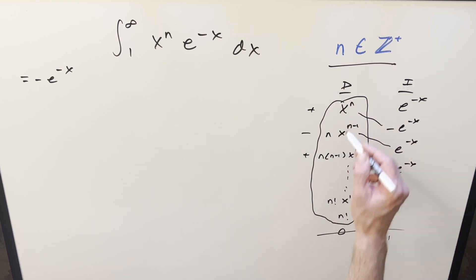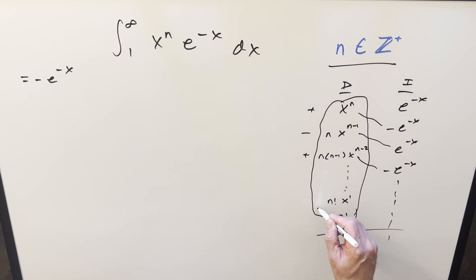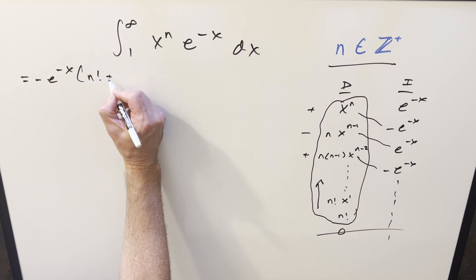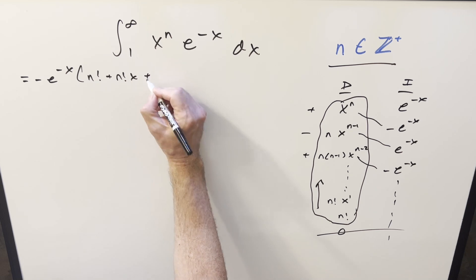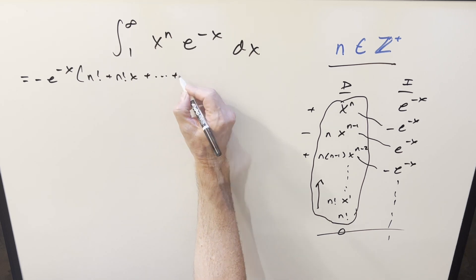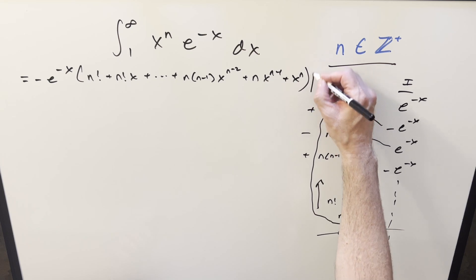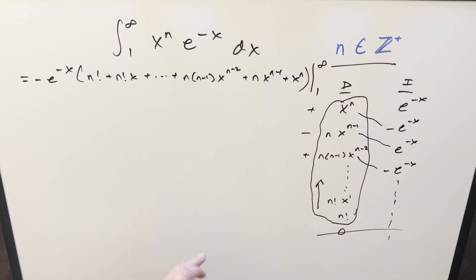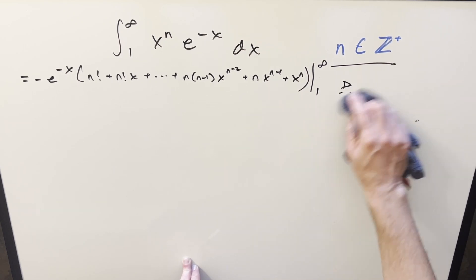What I'm going to do is copy this down — I usually go top to bottom, but let's go bottom to top because it's going to set this up a little nicer. So we're going to have n factorial plus n factorial times x, then a whole bunch of terms, and then the last three terms. This whole thing is going to be evaluated from one to infinity. Now we can just evaluate this — let me make some space because we're going to need it with such a long expression.